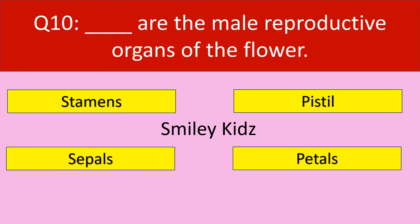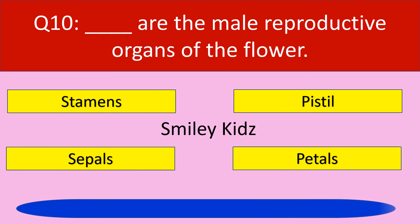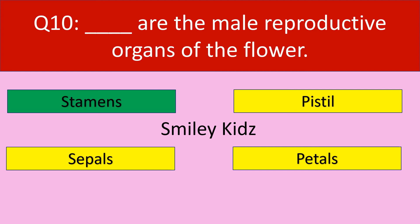Question number 10. These are the male reproductive organs of the flower. Options are: stamens, pistils, sepals, petals. The correct answer is stamens. Stamens are the male reproductive organs of the flower.